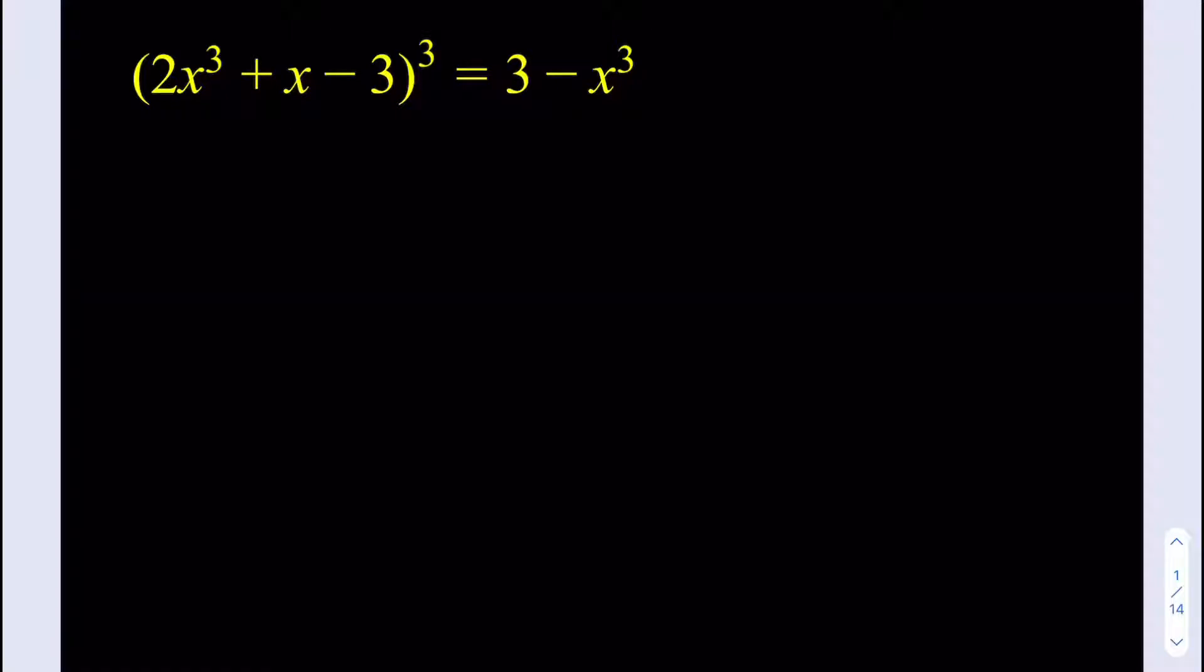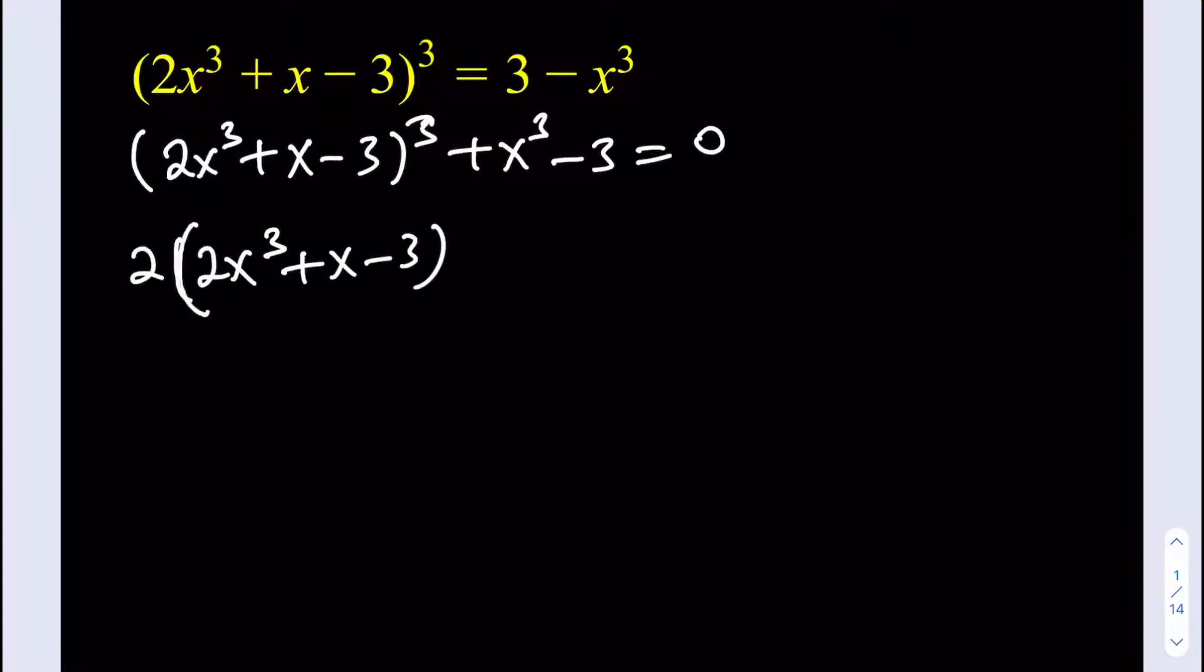First, in this equation I'm going to put everything on the same side. So I'll be getting (2x³+x-3)³+x³-3=0. What I'm going to do next might be a little surprising, but we're going to be using a very cool technique in algebra. I'm going to multiply both sides by 2, and you're going to know in a little bit why I'm doing that. I'm going to split this up a little bit.